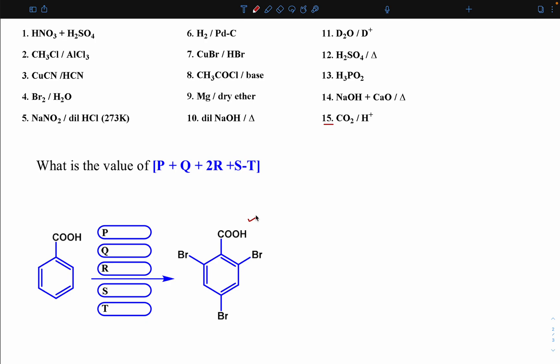This is the new format. Such type of question may come in JEE exam. This will be the category like an integer type: P plus Q plus 2R plus S minus T. Those P, Q, R, S, T are the numerical values in front of the reagent in the reagent pool.